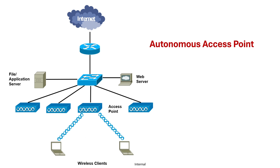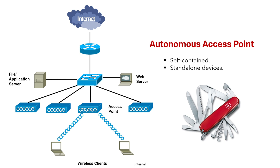Let's have a quick overview of autonomous access points. Autonomous access points are self-contained, standalone devices that operate independently. They are like the Swiss army knives of wireless networking — they can handle everything on their own, from managing wireless connections to enforcing security policies.